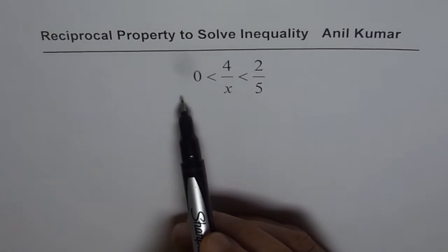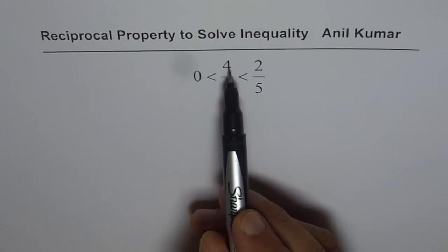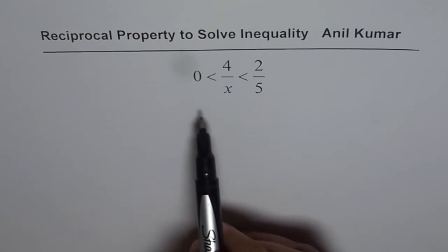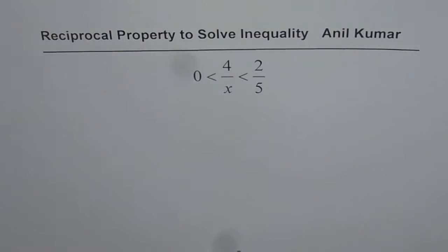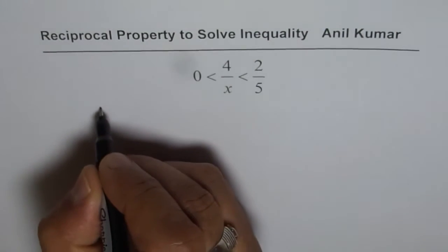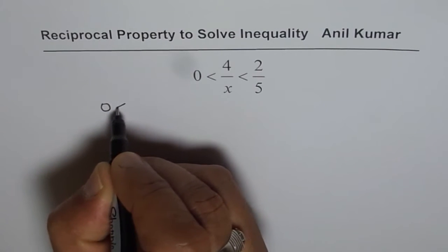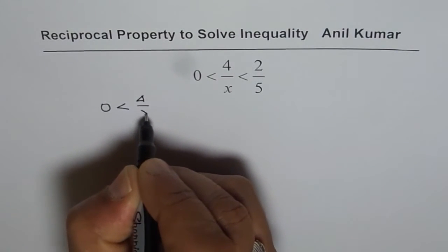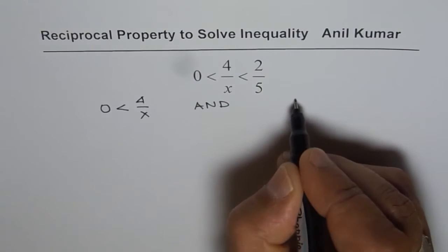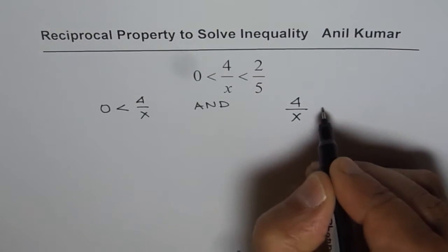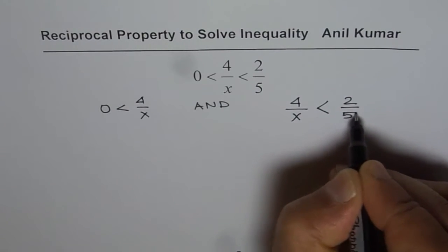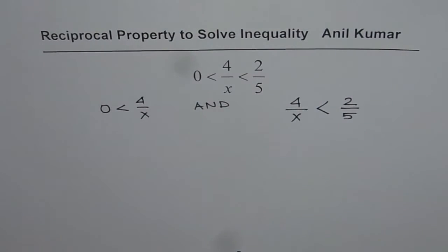The question here is that 0 is less than 4 over x, which is less than 2 over 5, and this kind of double inequality is to be solved. We can treat this in two parts: 0 is less than 4 over x, AND 4 over x is less than 2 over 5. That is what we mean by this double inequality.